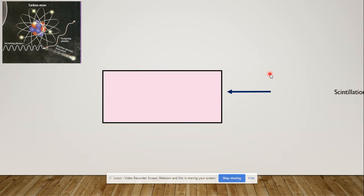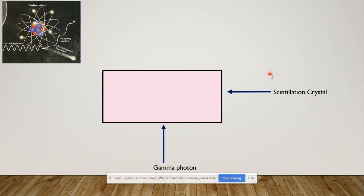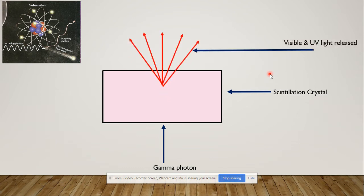The second component of the gamma camera is the detector, which consists of a scintillation crystal. This crystal converts high-energy photons into light energy photons. When a gamma photon hits the scintillation crystal, it converts those gamma photons into tiny flashes of visible light — a high-energy gamma photon is converted into small-energy visible light.